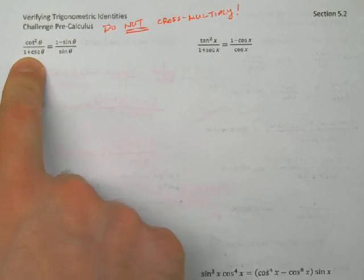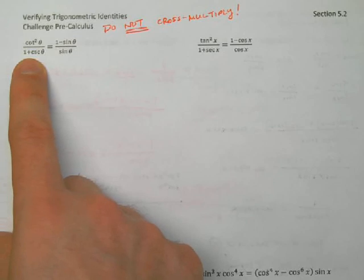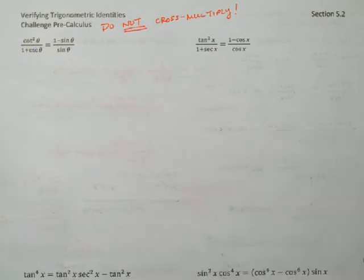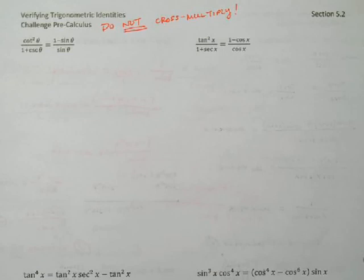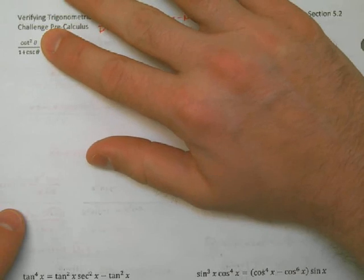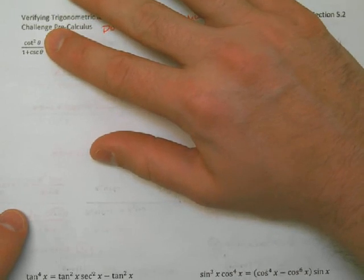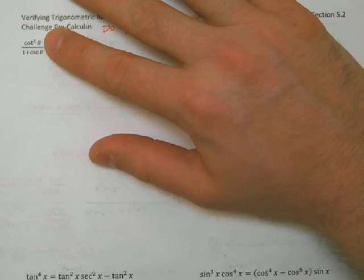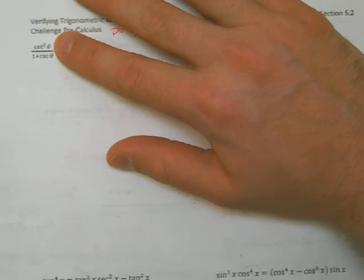Now on the top I see a difference of squares — cosecant squared is a perfect square and 1 is a perfect square, so I can factor the top as (cosecant theta plus 1)(cosecant theta minus 1). On the bottom I have 1 plus cosecant theta. Do you see why I chose that? Those two terms cancel. On the right side I still have 1 minus sine theta over sine theta, and I'm only working with one side at a time.